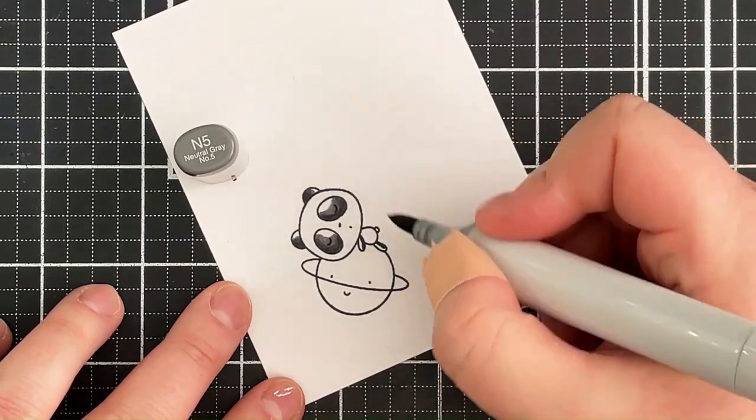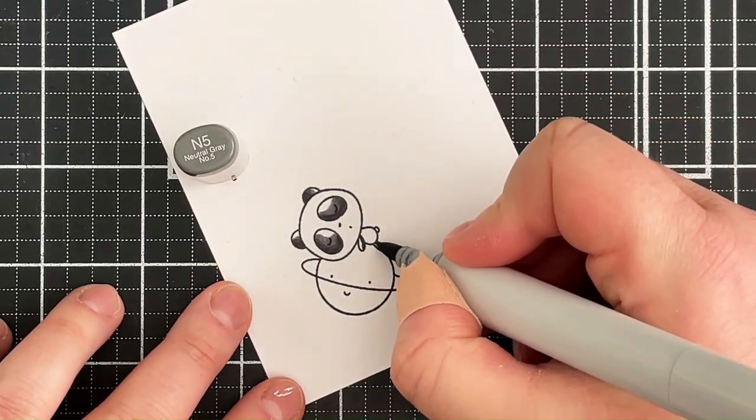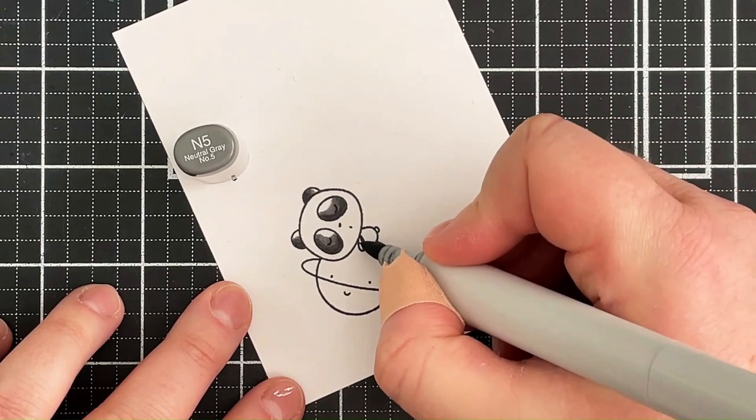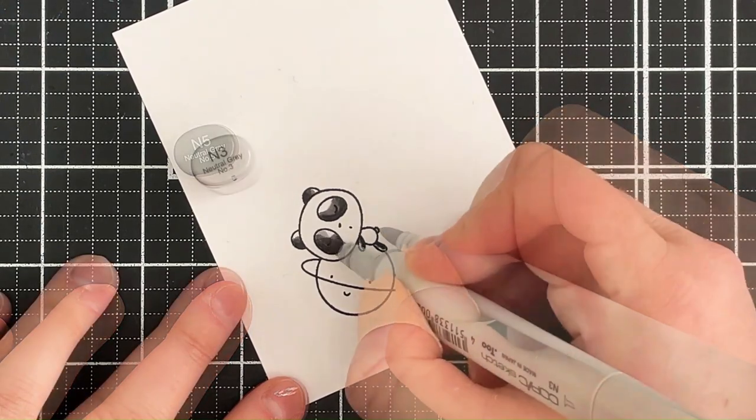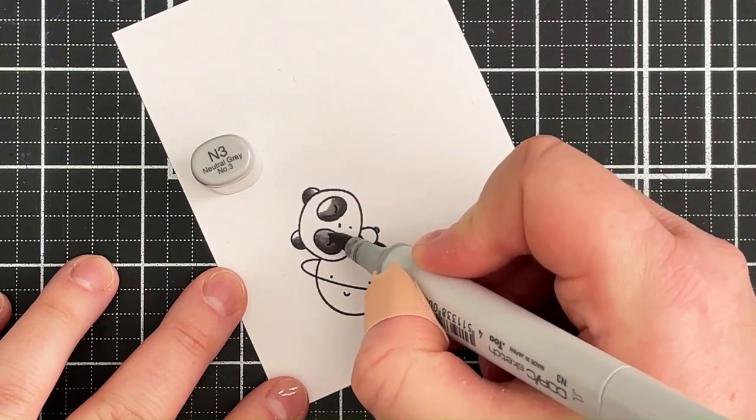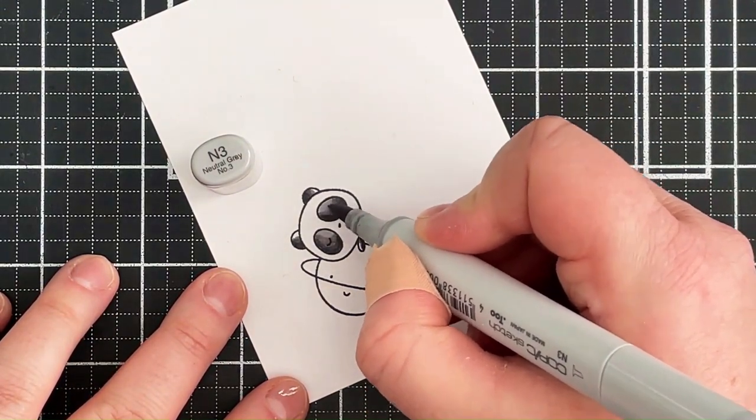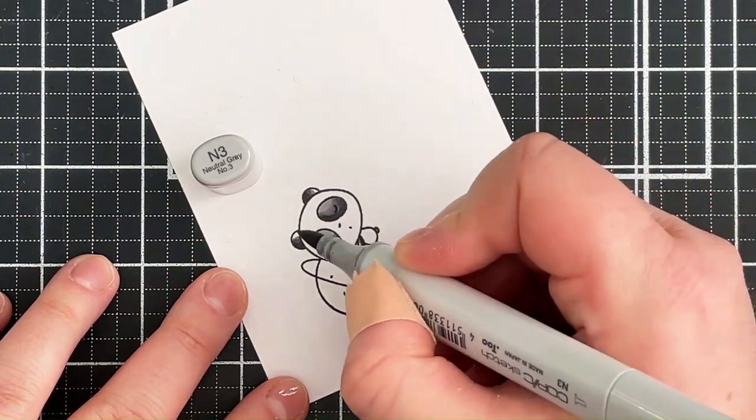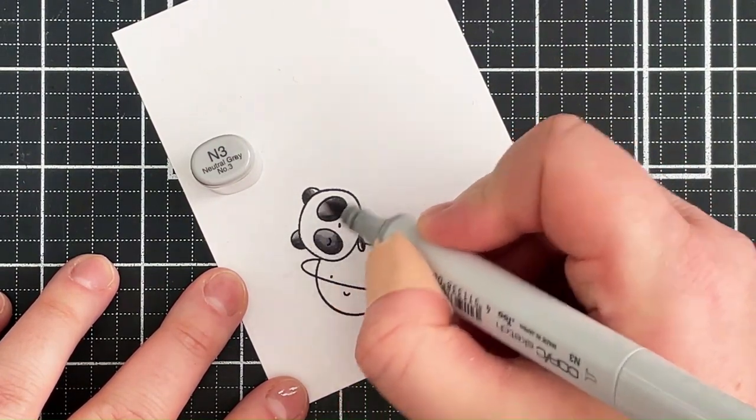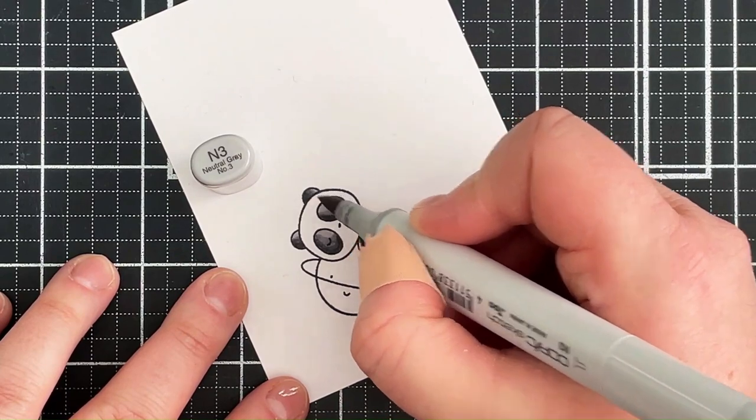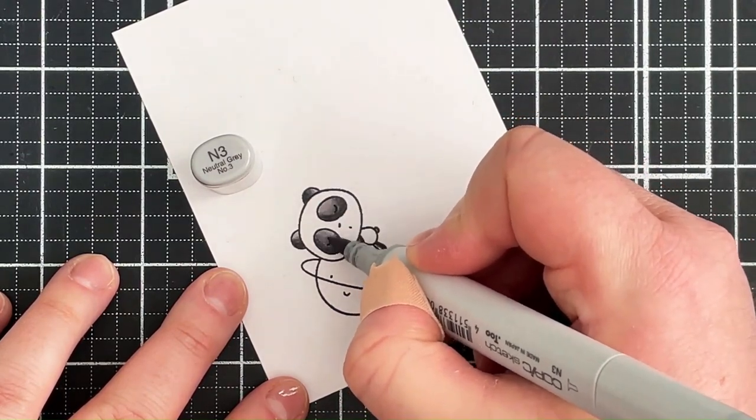I do go in and color in the tail at this point as well, and then I can blend that out further with the N3. It did take me a little while just to try and blend the N5 and the N3 together. It doesn't particularly look like a great blend on camera, in real life I think it was a lot better.